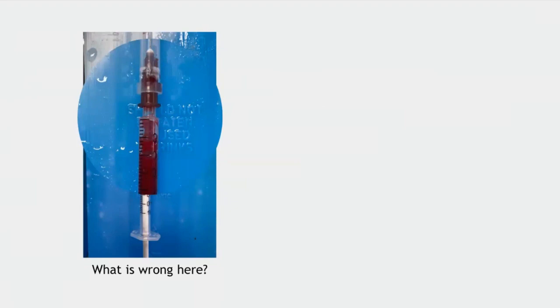Air bubbles in an ABG syringe will cause a wrong PO2. Most commonly it results in a higher PO2 reading, but it depends on the patient's actual PO2. If blood PO2 is higher than atmospheric PO2, oxygen moves from blood to the air column; if lower, oxygen moves the other way. Either way, air bubbles are unacceptable — ensure all bubbles are removed before sending the sample.